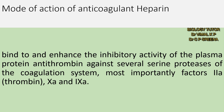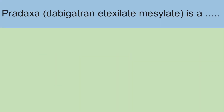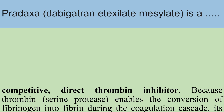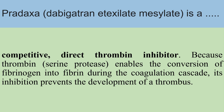Mode of action of anti-coagulant heparin: Heparin binds to and enhances the inhibitory activity of the plasma protein anti-thrombin against several serine proteases of the coagulation system, most importantly factors 2a, 10a, and 9a. Dabigatran etexilate mesylate is a competitive direct thrombin inhibitor. Its mode of action: thrombin enables the conversion of fibrinogen into fibrin during the coagulation cascade, and its inhibition prevents the development of a thrombus.